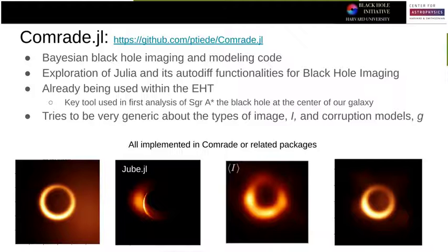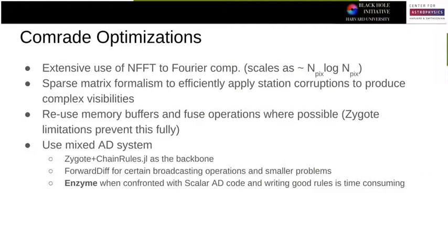It also tries to be very generic — we've implemented all those models I talked about earlier. I tried to put on my CS hat a little. I tried to get scaling to at least what it should be: N log N for the Fourier transform, sparse matrices instead of dense matrices wherever I could, and memory buffer reuse as much as possible — though Zygote prevents that. I also use a mixed AD system: Zygote and ChainRules as the backbone, ForwardDiff sometimes for broadcasting, and Enzyme when all else fails and the code is amenable.